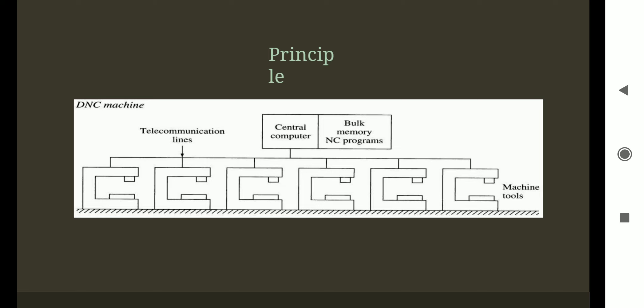In this figure you can see there is a central computer connected to the bulk memory of NC programs. A number of machine tools are connected with the central computer, which is further connected with the bulk memory. There is a telecommunication line used to communicate between the central computer and the different machine tools. Here we can control multiple machines with the help of a single central or server computer, and programs fed to machines can be stored in the bulk memory NC program system.